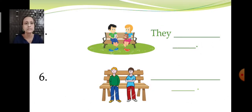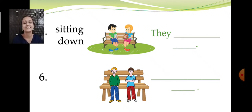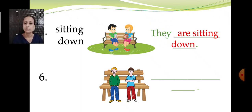Now let us move forward to question number five. There are two children sitting. So what do we write? They. For more than one, we are going to use the word 'they'. And next to 'they' will be 'are'. They are sitting down. For 'he' we used 'is', for 'she' we use 'is', and for 'they' we are going to use the helping verb 'are', because it is more than one. They are sitting down.